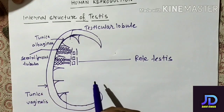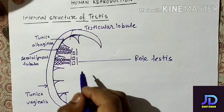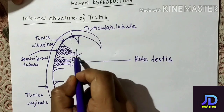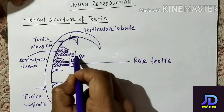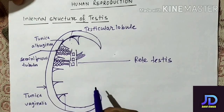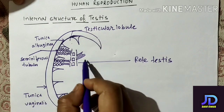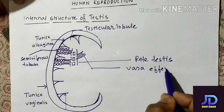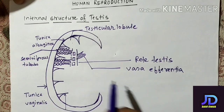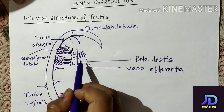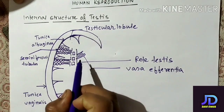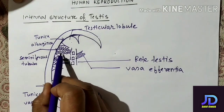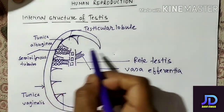This rete testis will open into another tube-like structure, and this tube-like structure is known as vasa efferentia. The vasa efferentia is the structure which will conduct substances produced inside the seminiferous tubules to their further destination.